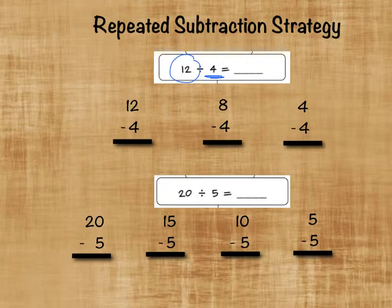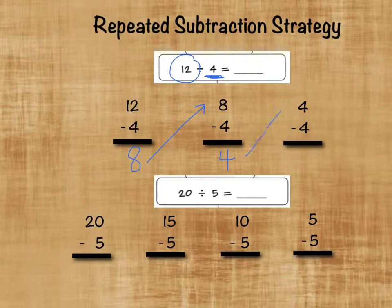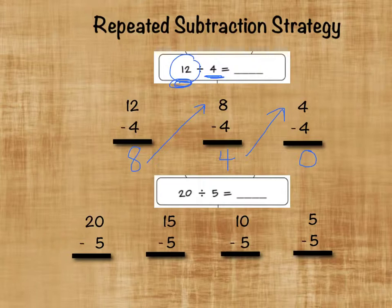So let's look at what we do here. 12 minus 4 equals 8. Once we have that, we're going to move that 8 up and keep subtracting. 8 minus 4 is 4. Then 4 minus 4 is 0. We have to get to 0 when we do repeated subtraction to make sure that we've used all of the dividend. If we're sharing out the cookies, or the cupcakes, or the monsters, we want to make sure that we've used all of them. We don't want to leave any left over.